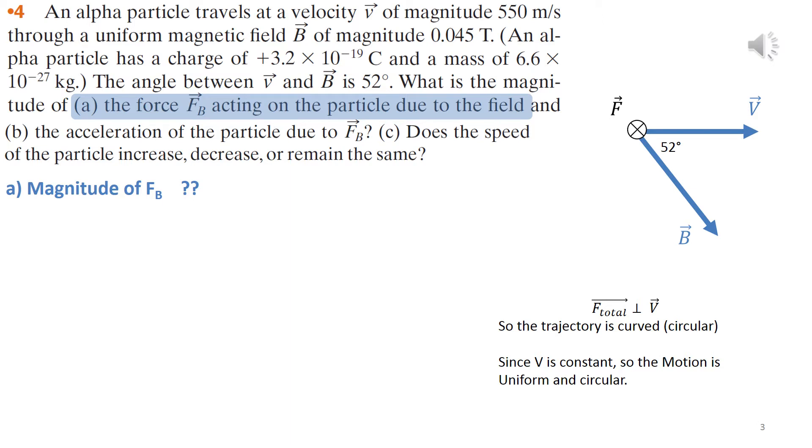So FB equals QVB sine 52. Please pay attention to put your calculator in degrees, not in radians.